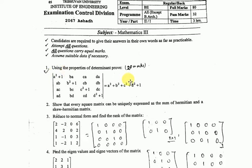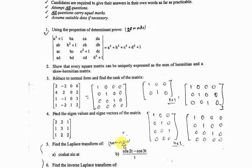Question number 1 asks to use the property of determinant to prove something. Question number 2 asks to prove a theorem. Question number 3 asks to reduce the matrix to normal form and find the rank of the matrix. Question number 4 asks to find the eigenvalues and eigenvectors. Questions 1, 2, 3, and 4 are all from Chapter 1 on Determinants and Matrices.